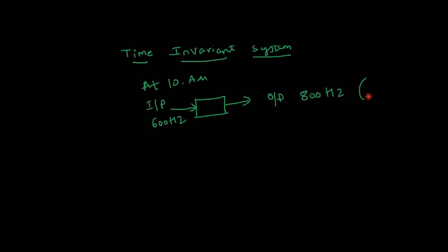The next classification is time-invariant systems. For example, consider a system. You give a certain input at morning 10 AM, say 600 Hz, and this system yields output 800 Hz. This is just for an example. If at 12 PM you give the same input to the system and the output which yields is 800 Hz, then the system is called time-invariant system.